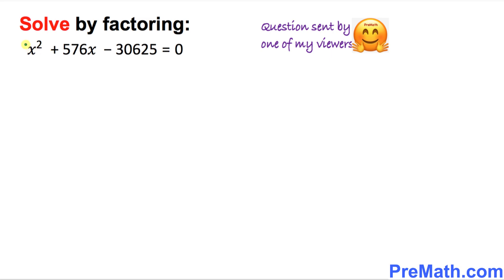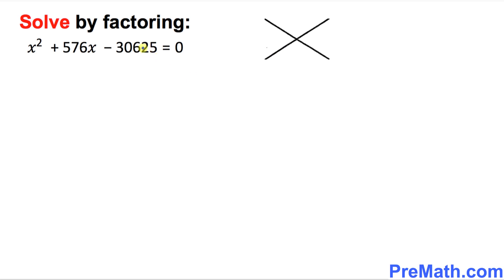Very first thing, I want you to focus on the leading coefficient. It is 1, just keep that in your mind. Our next step is to write down this constant number, the number on the very right hand side, on the top of this X factor: 30625. And the middle number, which is positive 576, is going to go at the bottom of this X factor.